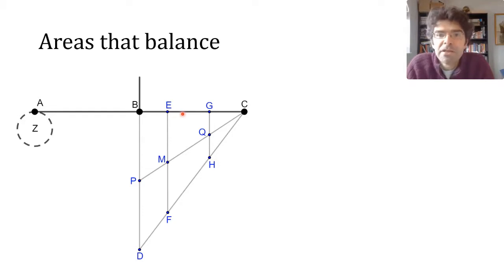For exactly the same reason, the Z that would balance a slightly different triangle, PCD, also has a third of that triangle's area.